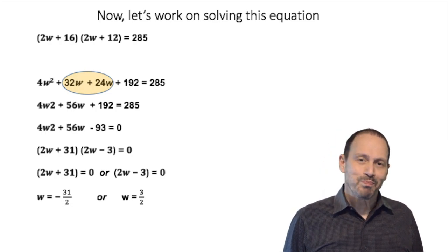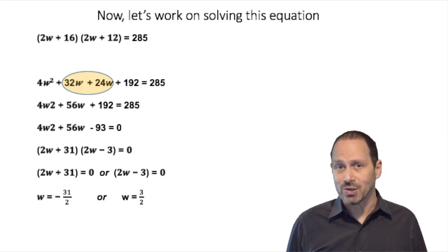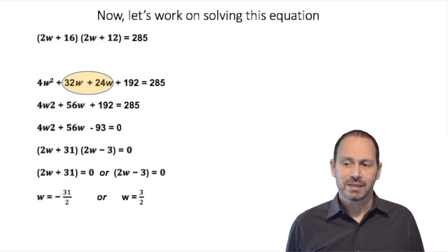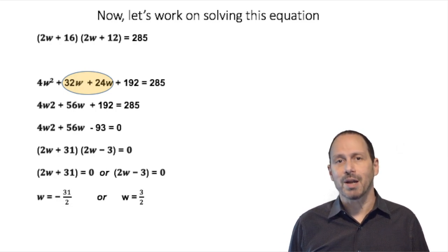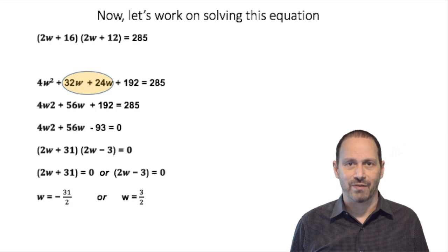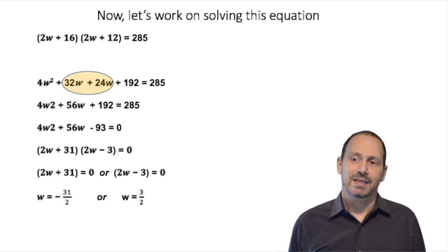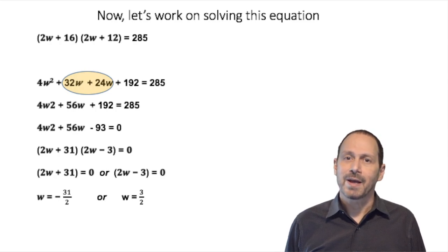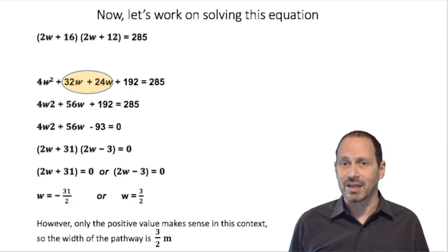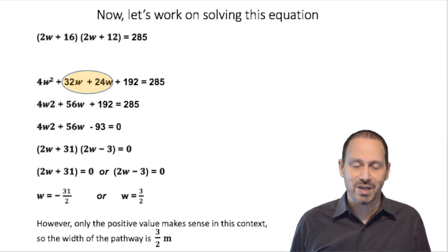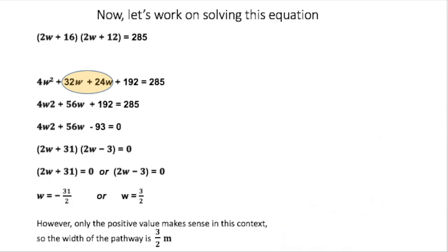Now because we're talking about area and about dimensions of the garden, we're talking about distance. And when we are talking about distance, in the context of distance, only positive response makes sense. Only positive results can be used in the contextualization of this problem. This is because distance is always positive.